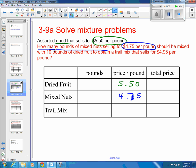Should be mixed with 10 pounds of dried fruit, 10 pounds of dried fruit, to obtain a trail mix that sells for $4.95.